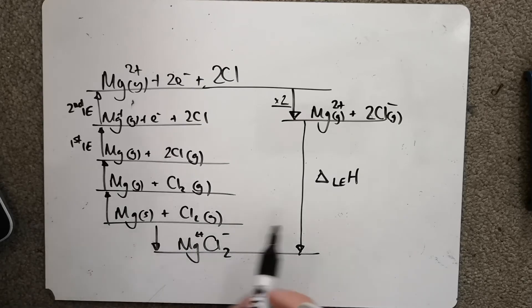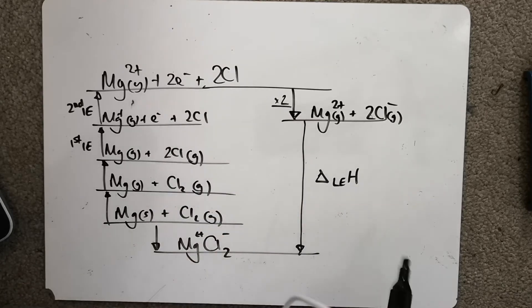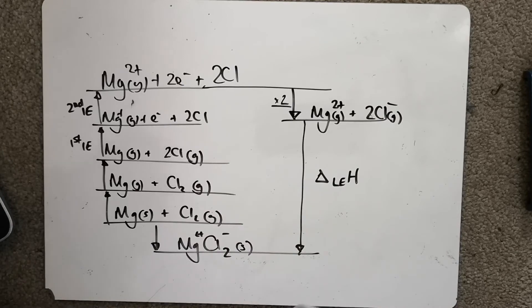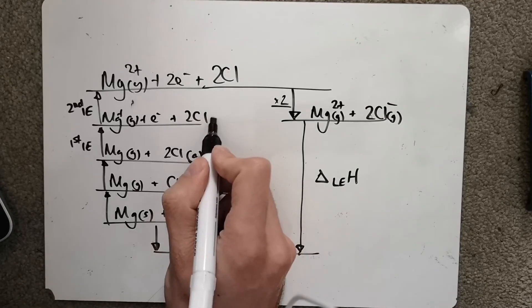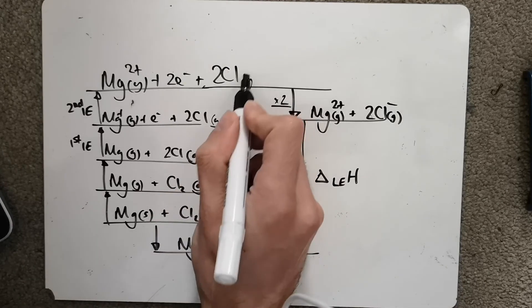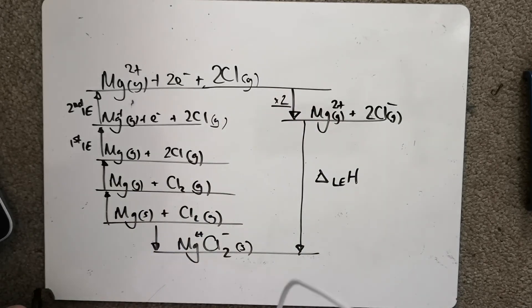That is a Born-Haber cycle for MgCl2. I just got that solid there. Just get my state symbols on. Always important here.